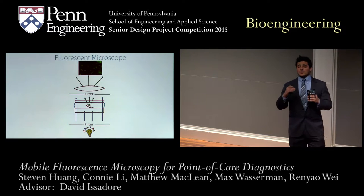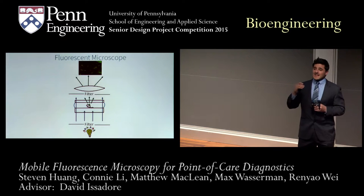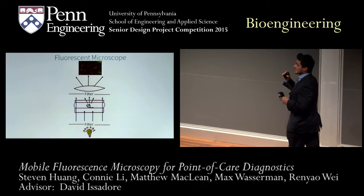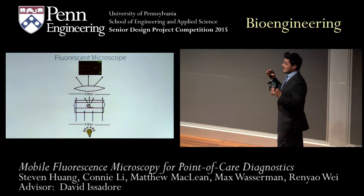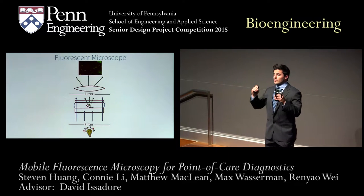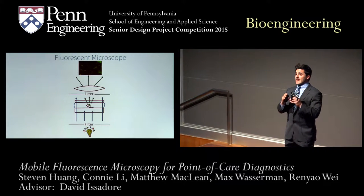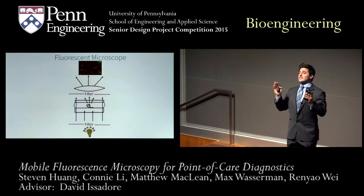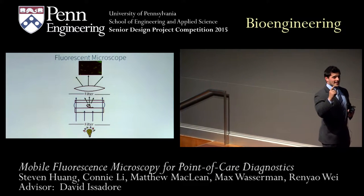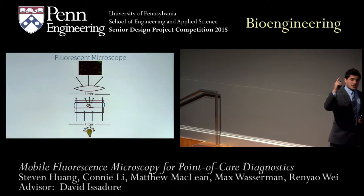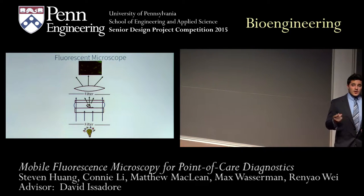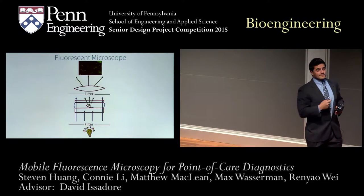A typical fluorescent microscope works like this: a halogen light illuminates from the bottom, passing through a filter which picks out the excitation wavelength of interest. This excitation wavelength then illuminates and interacts with the fluorescent tag, causing it to fluoresce at a different wavelength. Both wavelengths hit a second filter which picks out only the fluorescent wavelength, creating the images you see.